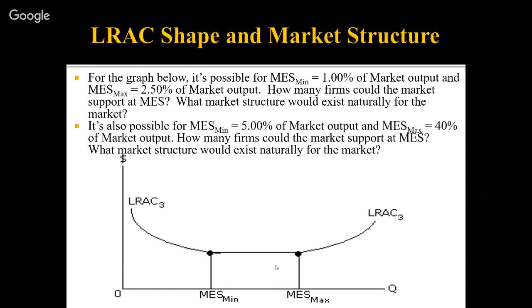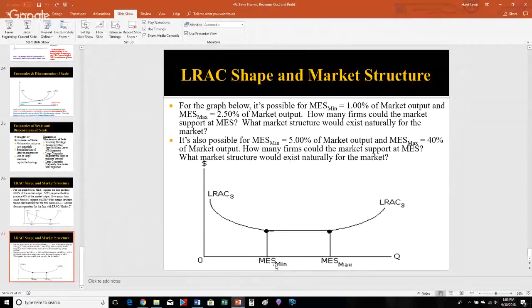Market structure has a number of attributes, and how big a firm needs to be to achieve minimum efficient scale determines how many businesses the market can naturally support. The smaller the firms and the more there are, the more competitive the market is. The larger the firms, the fewer the market can support, and the more it becomes like an oligopoly or monopoly.